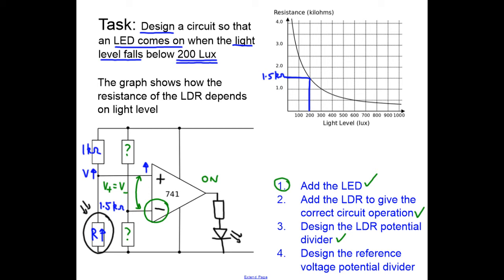I've got to make my potential divider, my second potential divider, this one here with the green question marks, give the voltage at 200 lux as my LDR and 1K resistor doing, which means that my two resistors have to be in the same ratio.